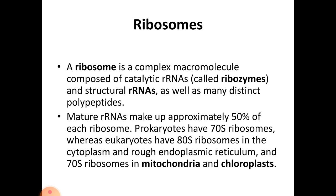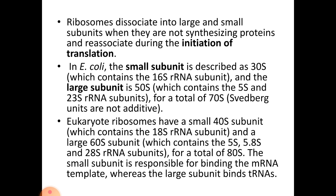Ribosomes are complex macromolecules composed of catalytic RNAs called ribozymes and structural rRNAs, as well as many distinct polypeptides. Mature rRNAs make up approximately 50 percent of each ribosome. Prokaryotes have 70S ribosomes, whereas eukaryotes have 80S ribosomes in the cytoplasm and rough endoplasmic reticulum, and 70S ribosomes in mitochondria and chloroplasts. Ribosomes dissociate into large and small subunits when not synthesizing proteins and reassociate during the initiation of translation. In E. coli, the small subunit is described as 30S, consisting of the 16S rRNA subunit, and the large subunit is called 50S, consisting of 5S and 23S rRNA subunits, for a total of 70S. 'S' stands for Svedberg units.